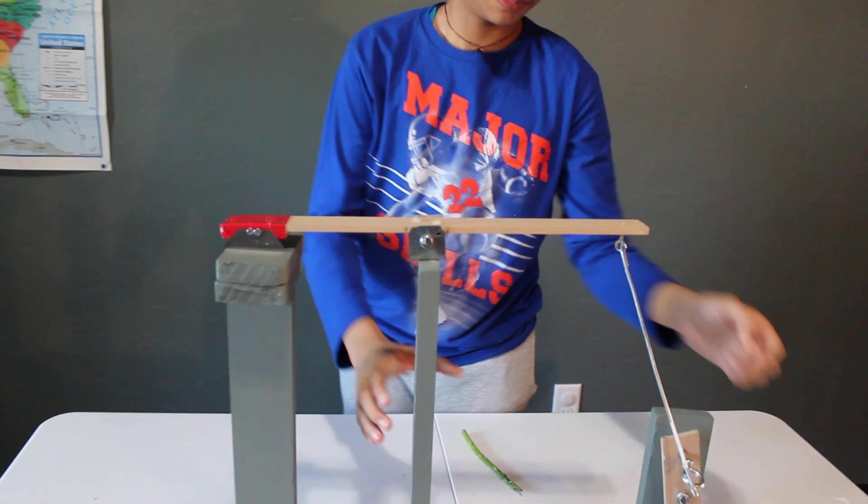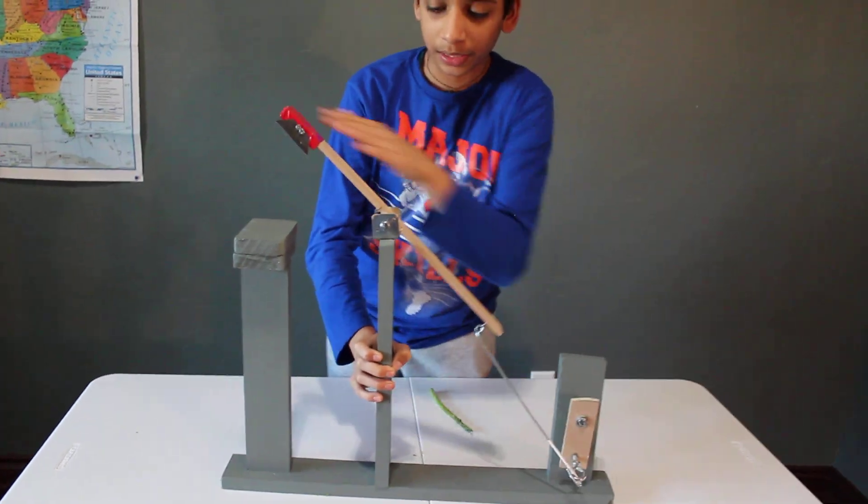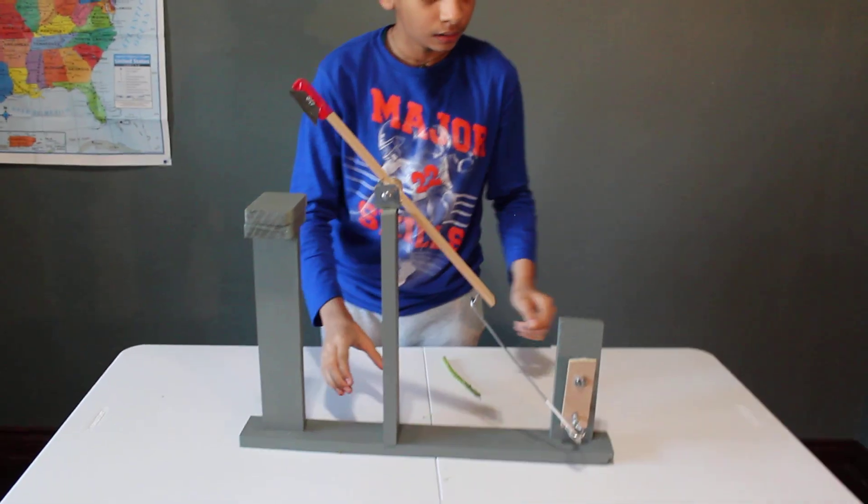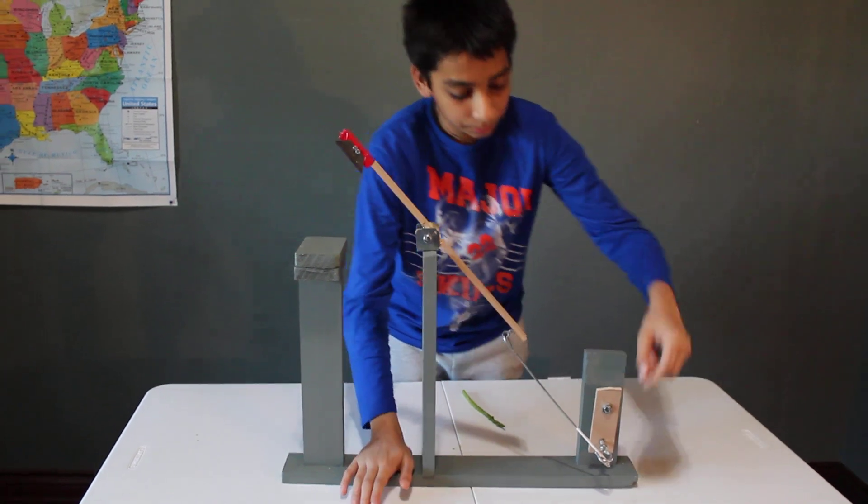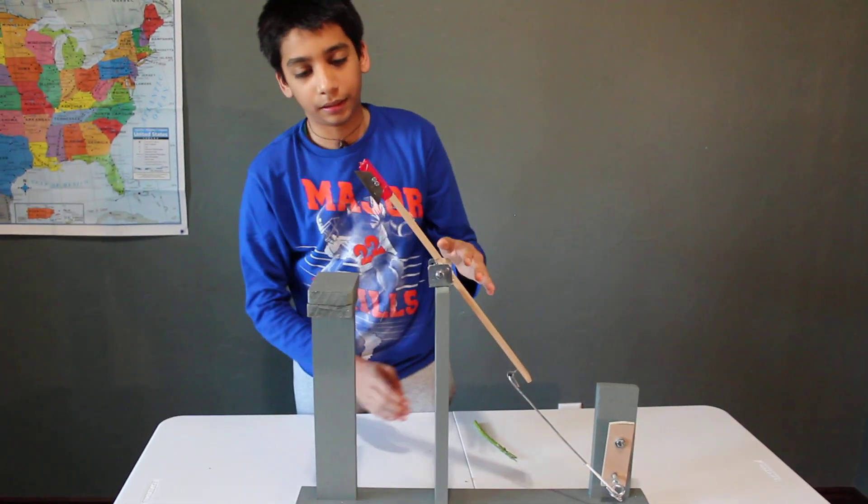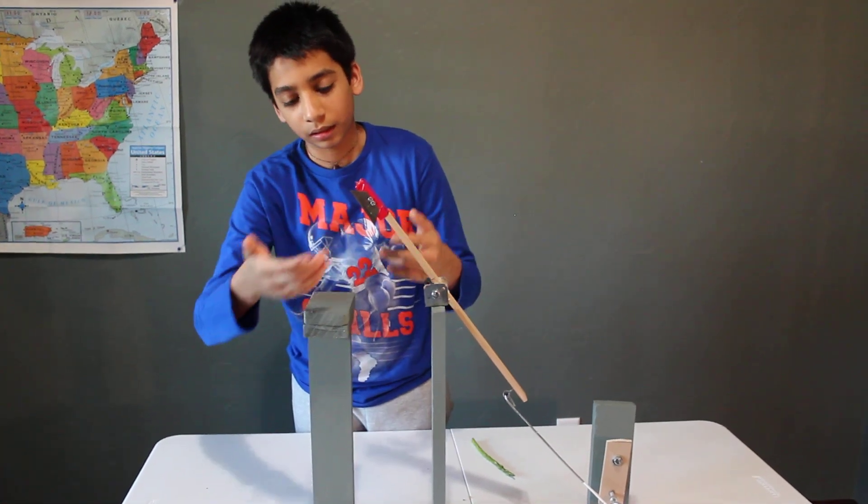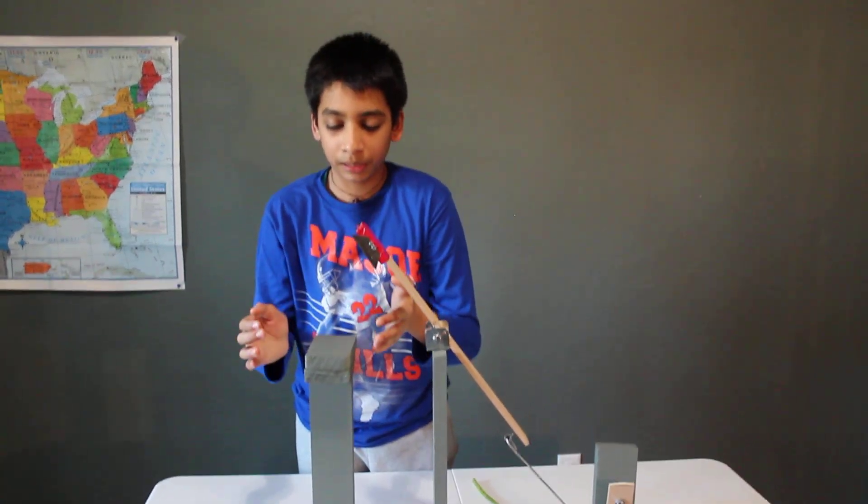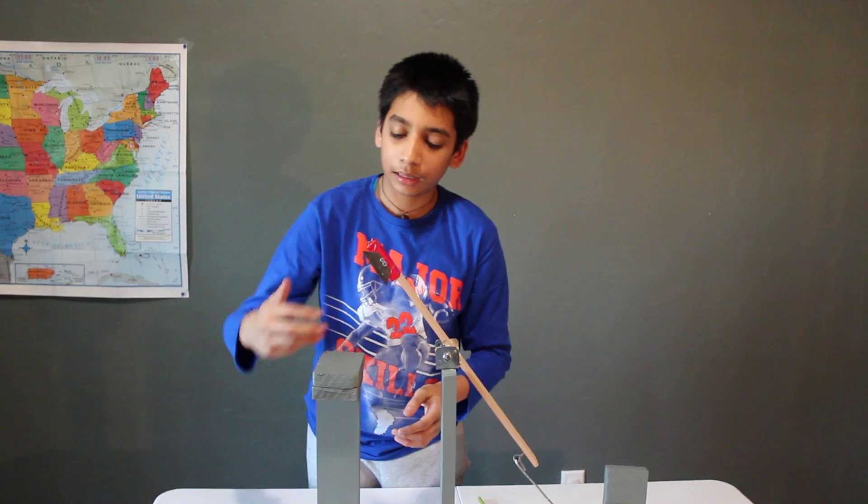If you consider it, there can also be a fifth simple machine, which is right here, which is the inclined plane. To operate this machine, you turn the wheel and axle, which makes the lever go up and down. The wedge is connected to the lever, so it will also go up and down, and it will cut anything placed on the platform.